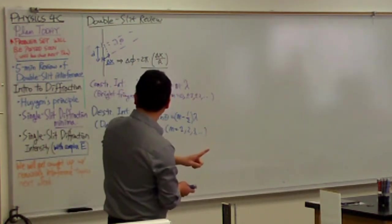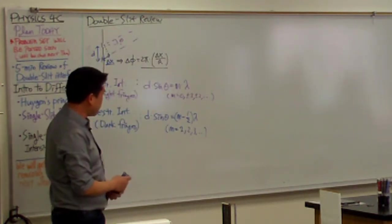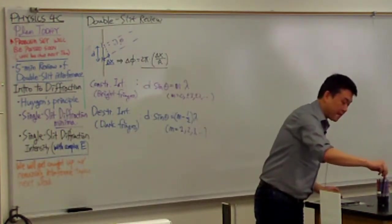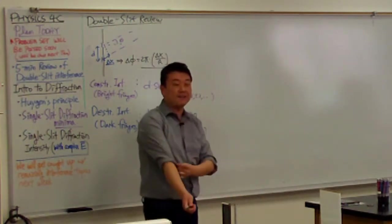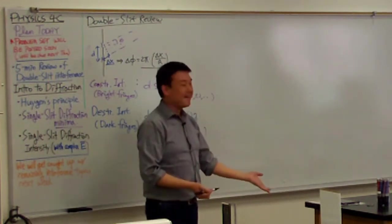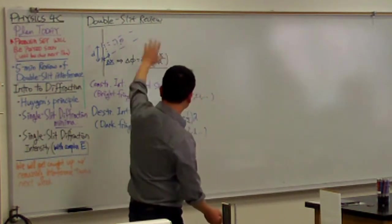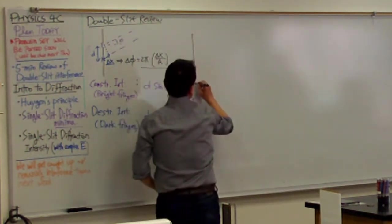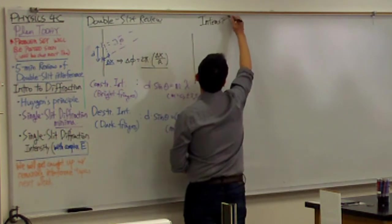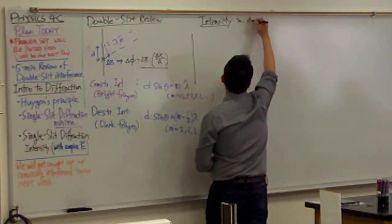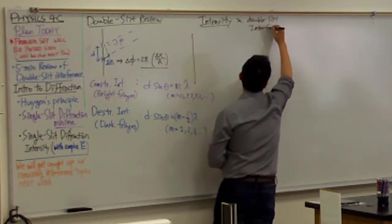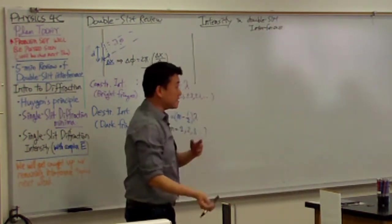That's what we talked about for double slit interference. I want to remind you of a mathematical tool that we spent a fair amount of time introducing last time, because the whole reason I did that was to be able to use it today. Today is going to go much quicker, thanks to spending that hour last Tuesday. The simple mathematics is what we want to use to analyze the intensity of light in double slit interference.